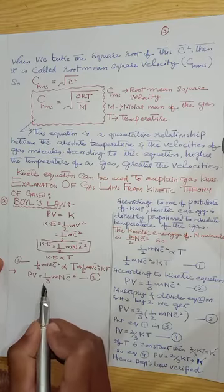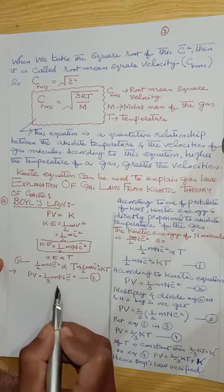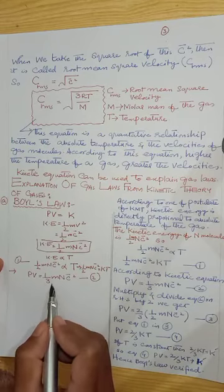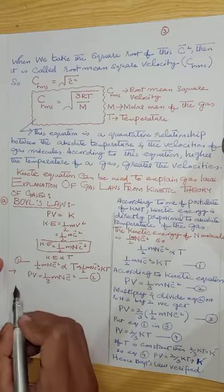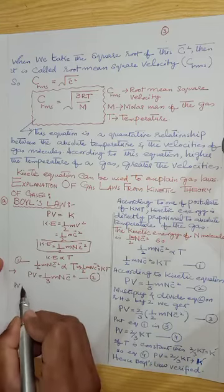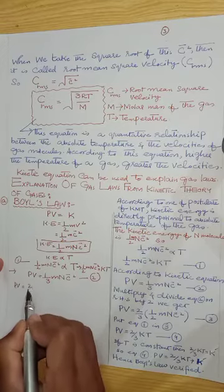On the right-hand side of the kinetic equation, we multiply and divide by 2. So PV = (2/3) × (½mnc̄²).